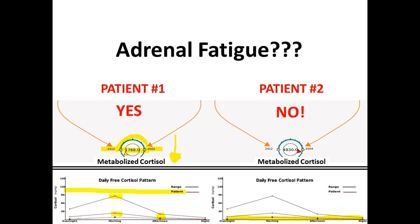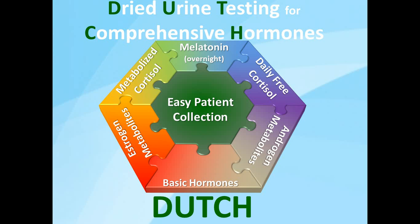When you look at the patient on the right, however, that is not the case. Metabolized cortisol is actually out-of-range high for this patient, meaning they make more cortisol than 85% of the population — yet you certainly don't get that message from the free cortisol pattern alone. So it's very important to look at both when trying to determine what's going on with the adrenals.